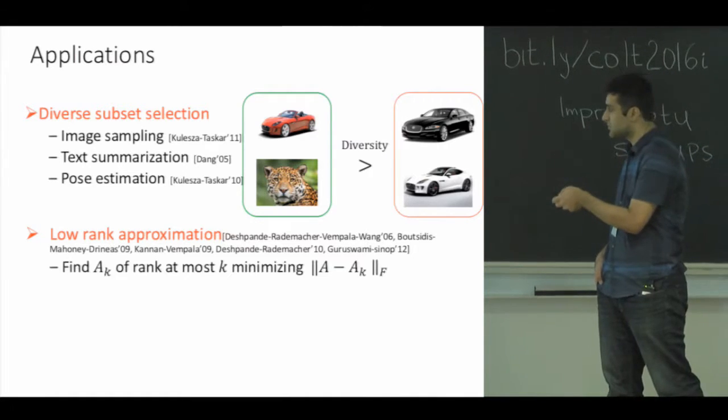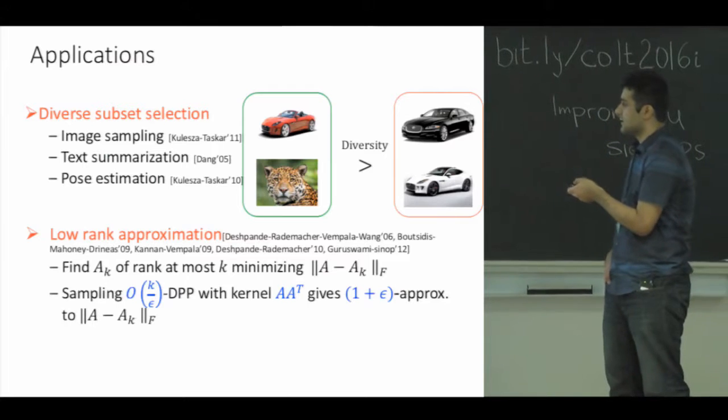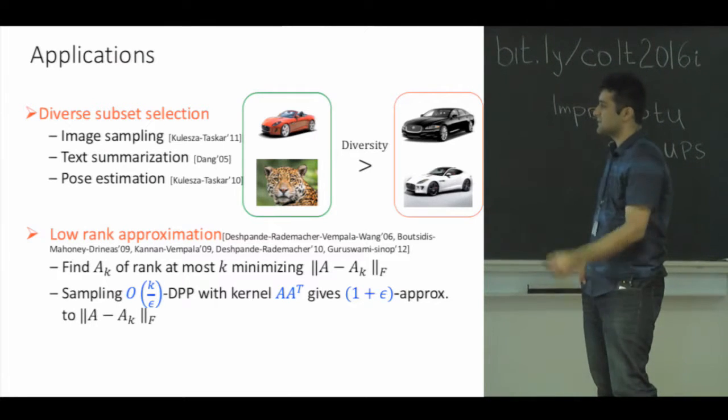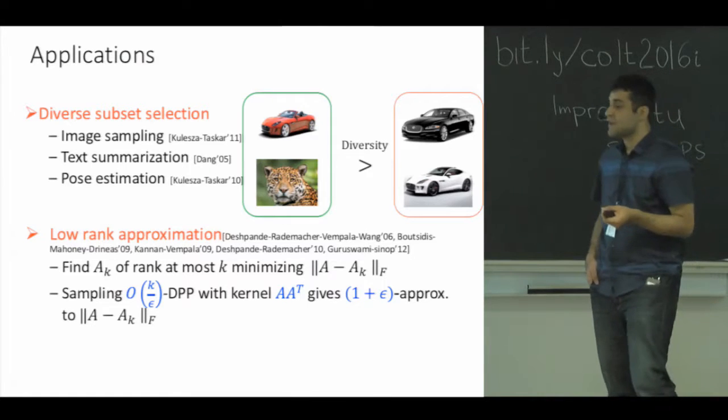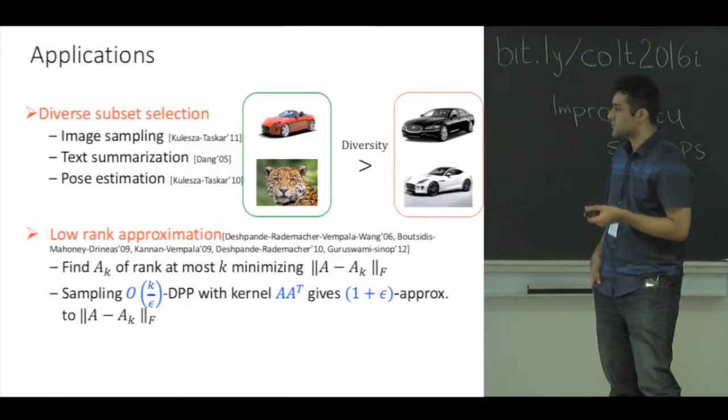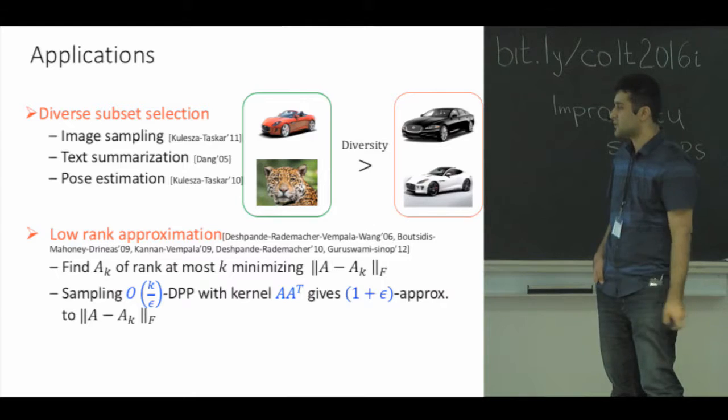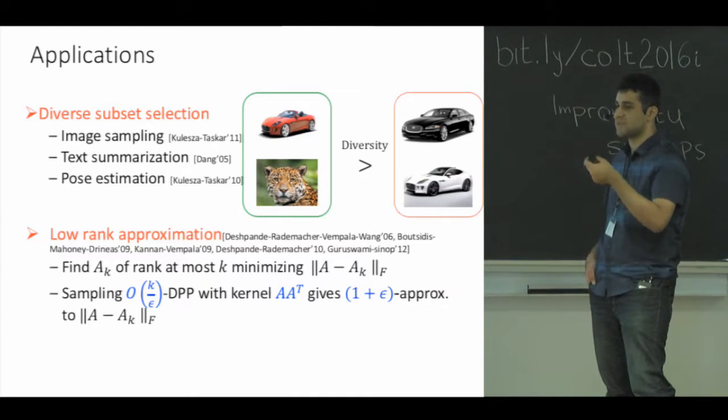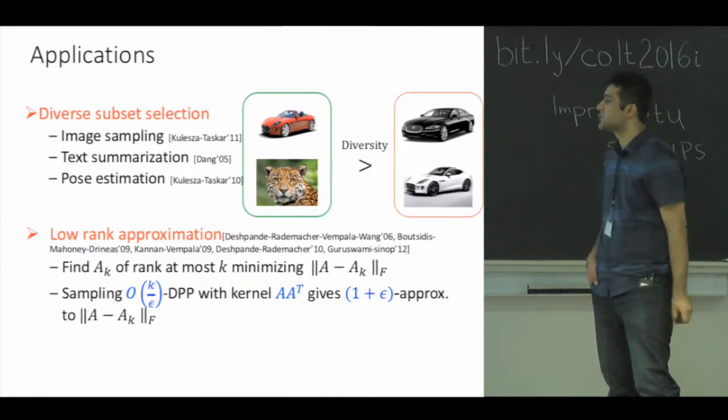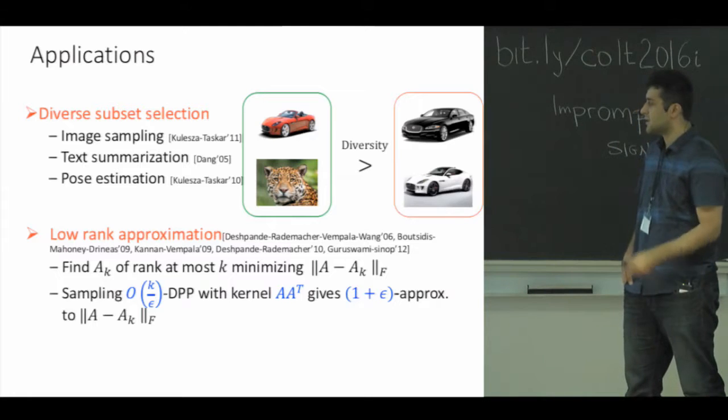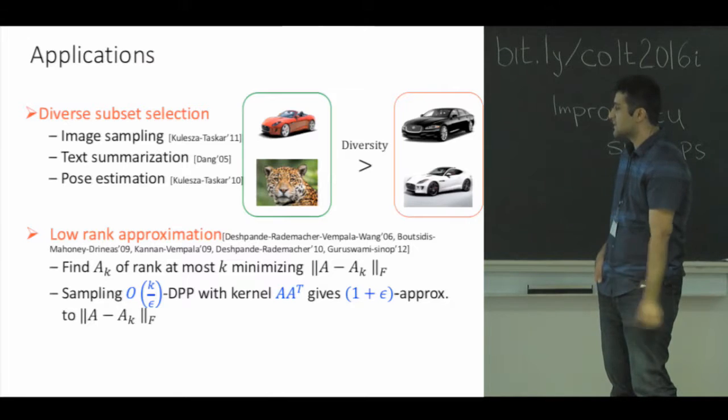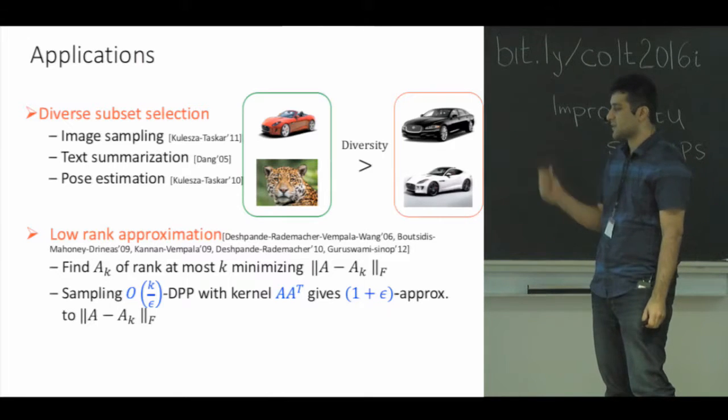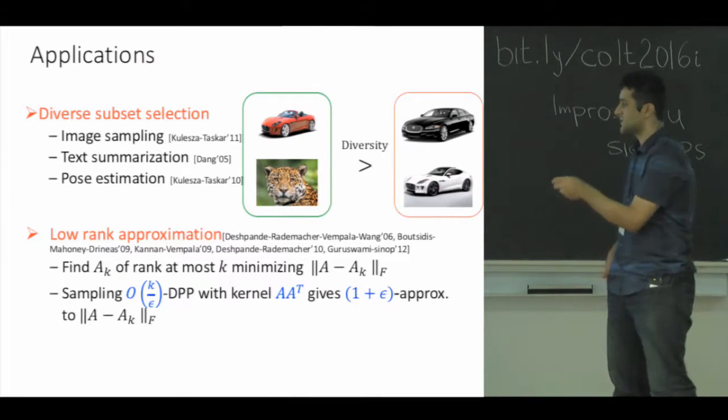The connection of k-DPP sampling to this low-rank approximation problem is coming from the fact that if you consider A transpose A as a kernel of a DPP and you sample k rows of matrix A according to this distribution, after projecting all rows of A onto the span of these sampled rows, you will get a one plus epsilon approximation to the best rank-k approximation of A in expectation.